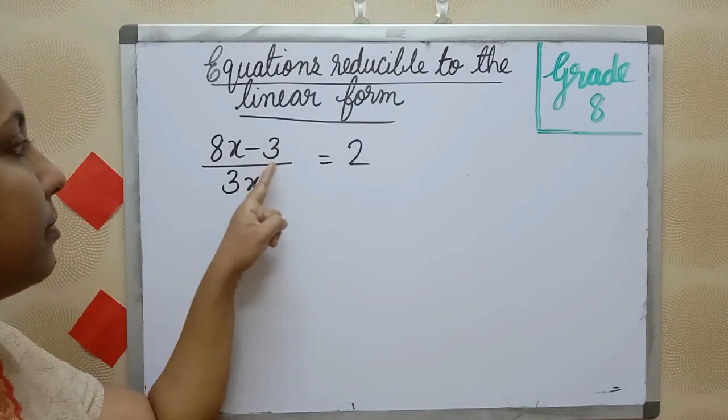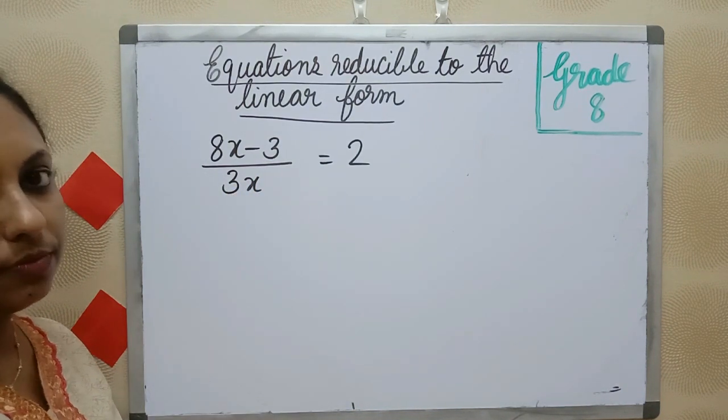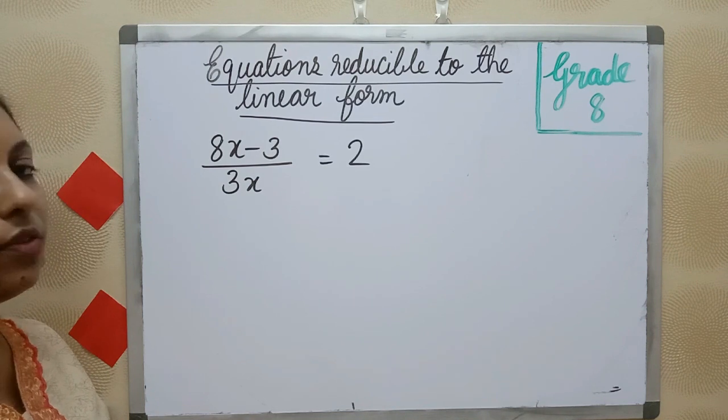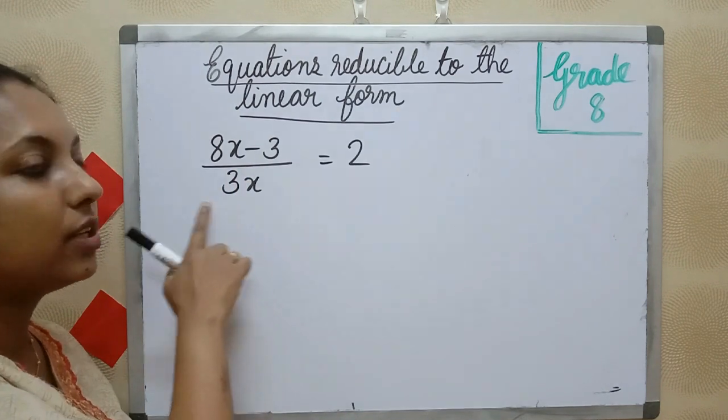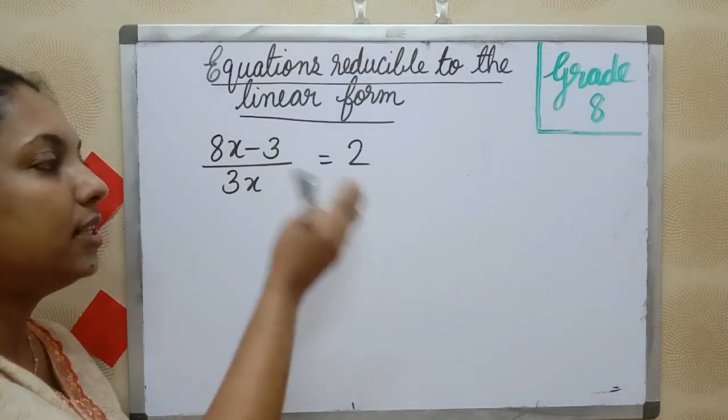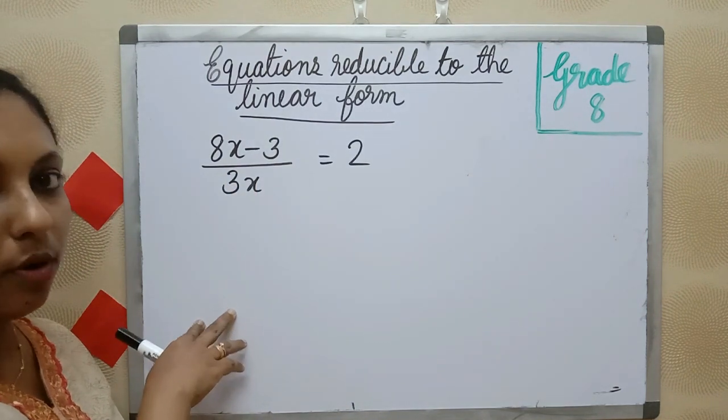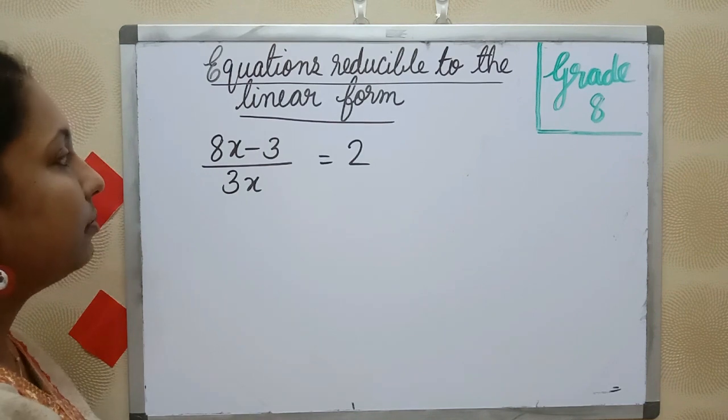This is 8x minus 3 by 3x is equal to 2. Observe the equation. This is not a linear equation because in LHS the expressions are not in linear form. So we can put it in the linear form. How? Let me explain.